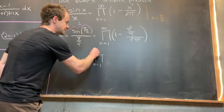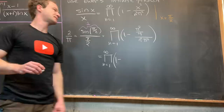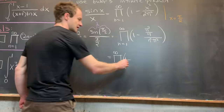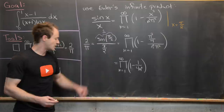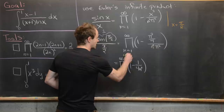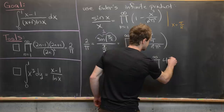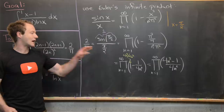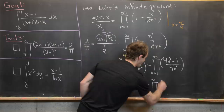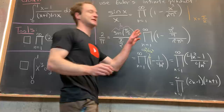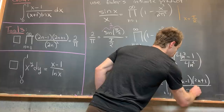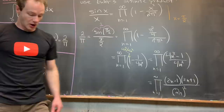Now we simplify. This is the product as n goes from 1 to infinity of 1 minus 1 over 4n squared. Giving this a common denominator, we write 1 as 4n squared over 4n squared, combining to get the product of 4n squared minus 1 over 4n squared. We factor the numerator as a difference of squares: (2n minus 1)(2n plus 1), and write the denominator as (2n)^2. That is exactly the Wallis product, so the first tool is proved.